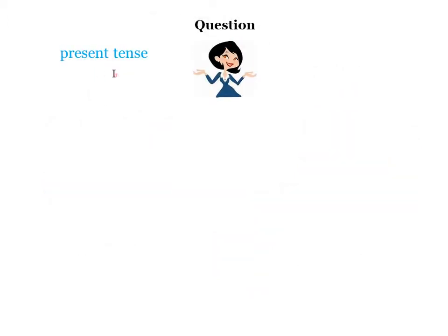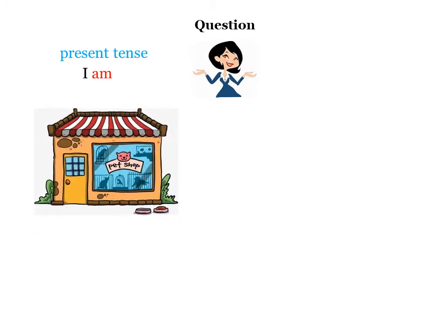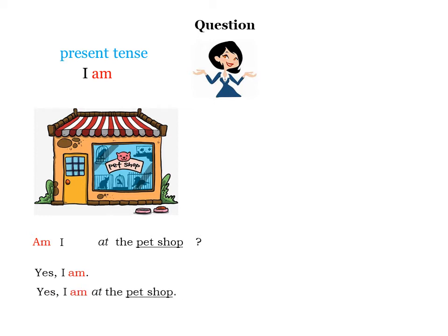Question. Present tense: I am. I am at the pet shop. To make a question, you move the verb to the front: Am I at the pet shop? A short answer: Yes, I am. And the sentence: Yes, I am at the pet shop.